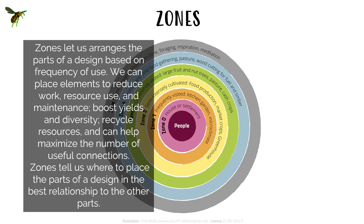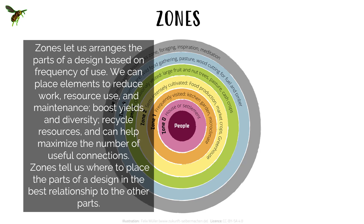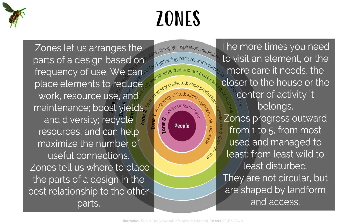Zones let us arrange the parts of a design based on frequency of use. We can place elements to reduce work, resource use, and maintenance, boost yields and diversity, recycle resources, and help maximise the number of useful connections. Zones tell us where to place the parts of a design in the best relationship to the other parts. The more times we need to visit an element, or the more care it needs, the closer to the house or the centre of activity it belongs.